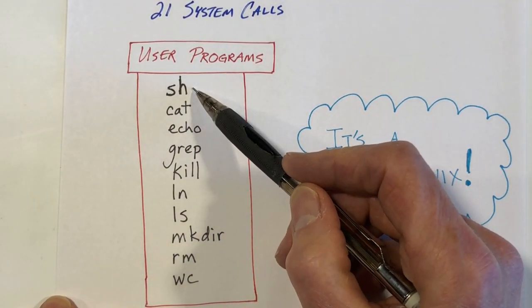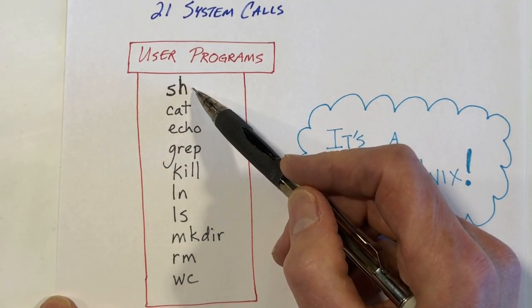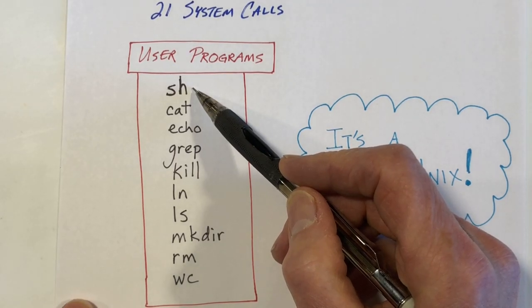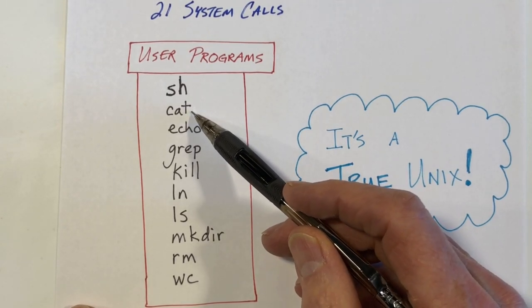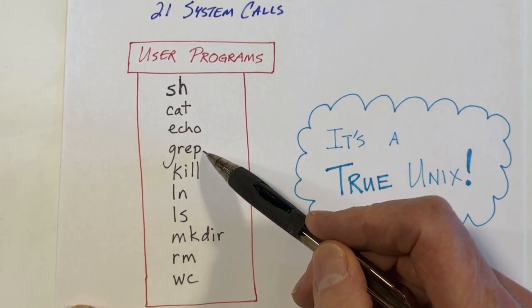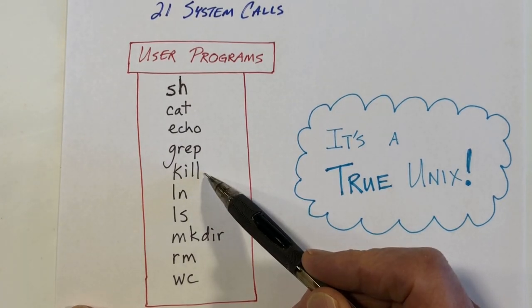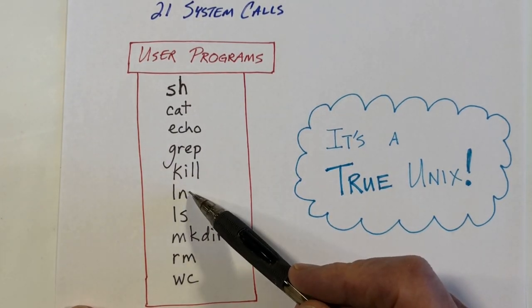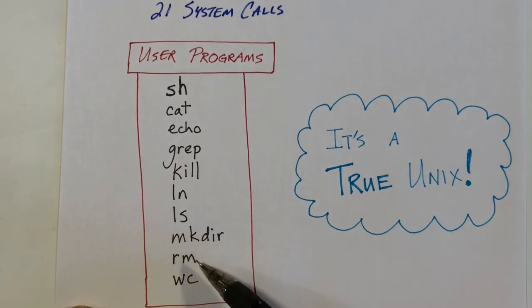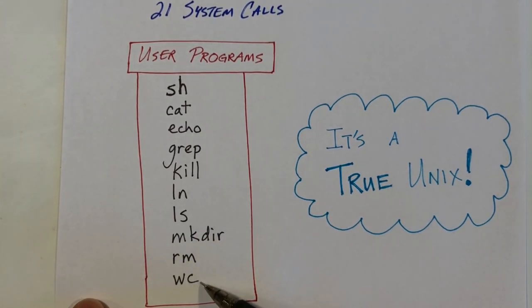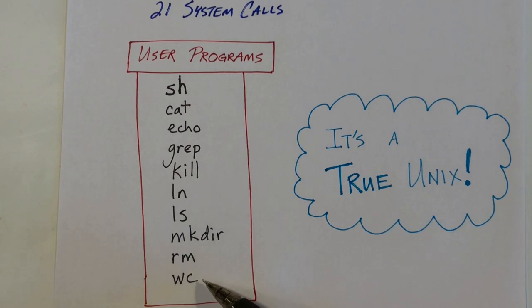The operating system can run a simple shell program. In fact, I made a video that talks about the shell program in detail. You can look for that if you want. You can look for other common Unix programs: cat, echo, grep, kill, which is used to terminate a process, ln, which is used to create a hard link from one file to another, and ls, which is used to list out the contents of a directory. You can create directories, you can remove files, and wc is for counting the words in a file, as well as the characters.